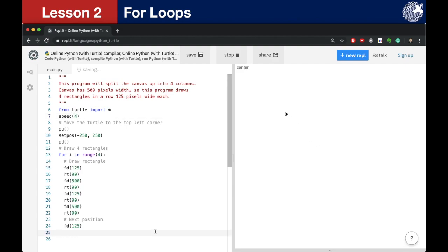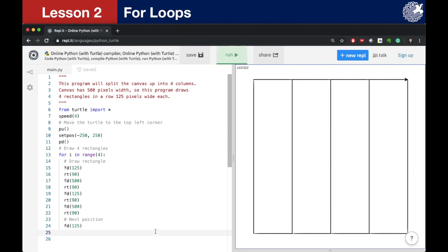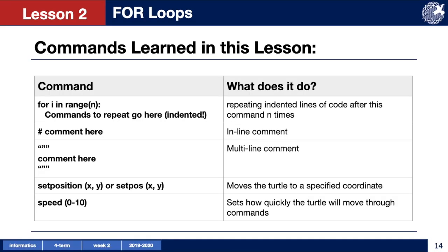Now let's sum up what we have learned in this lesson. We have learned the for loop command which allows us to repeat the section of indented code. We have learned how to write multiline and inline comments and why it's important to use them. Set position command allows us to move the turtle to a specified coordinate, and we also learned how to slow down or speed up the flow of our code by using the speed command.